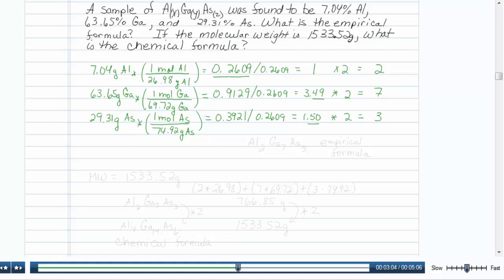Here we go. Now, we have the empirical formula of it, 2 aluminums. We have 7 galliums, and 3 arsenics.